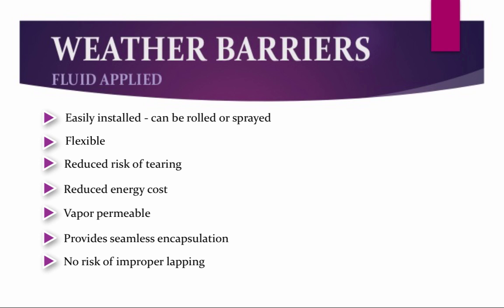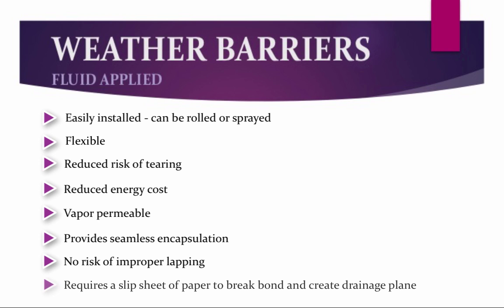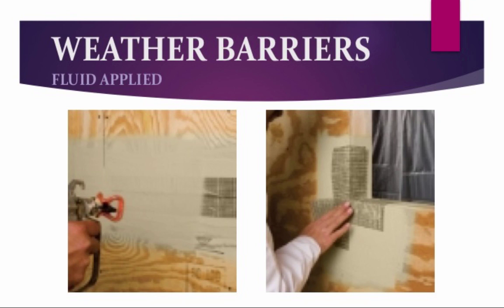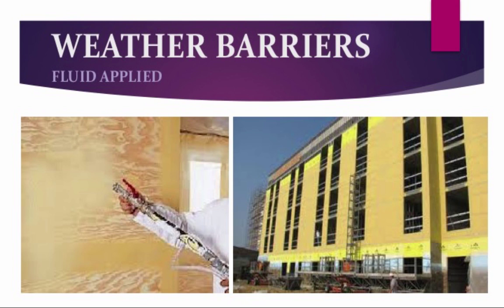Any fluid-applied weather barriers used with stucco or one-coat stucco will require a slip sheet of paper to break the bond and create a drainage plane. Fluid-applied weather barriers are first installed over the joints, embedding a fabric or mesh. They should also be installed over the rough openings prior to windows or doors going in, and many manufacturers have preformed pieces for corners. After the joints have been treated, you may apply the fluid-applied weather barrier with a sprayer, roller, or brush. Different manufacturers have different wet mill thickness requirements and some require multiple coats — please check with the manufacturer.